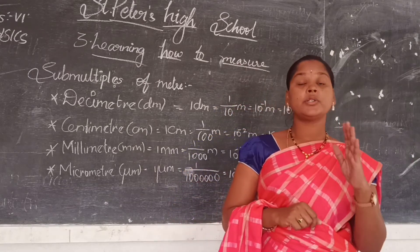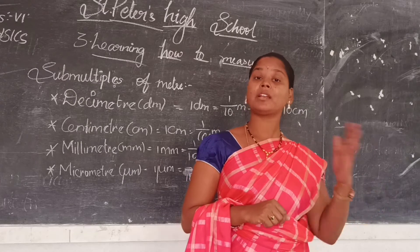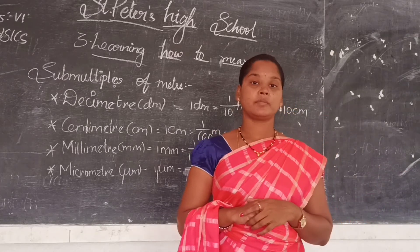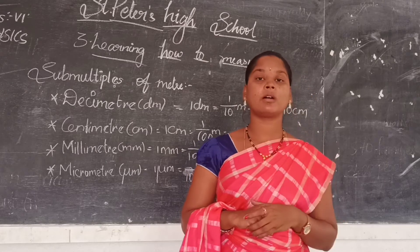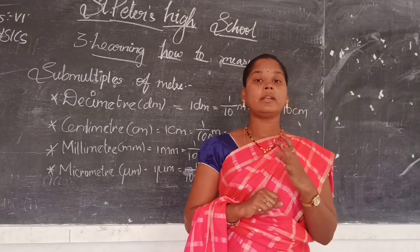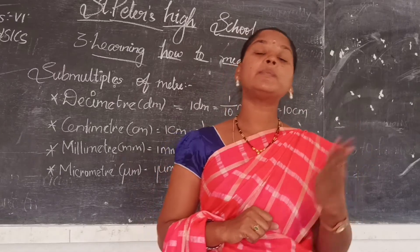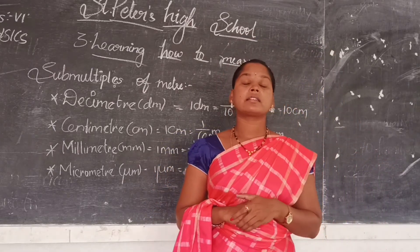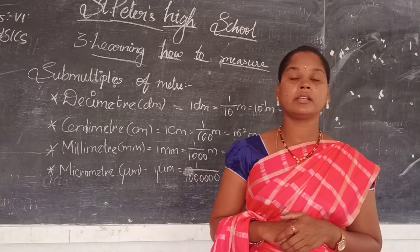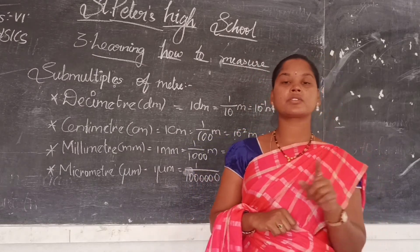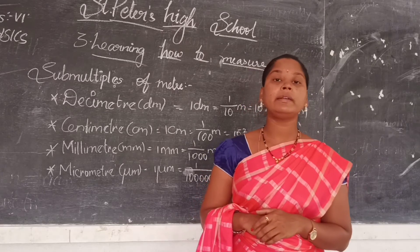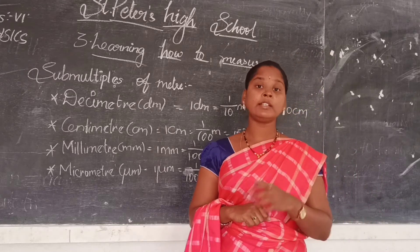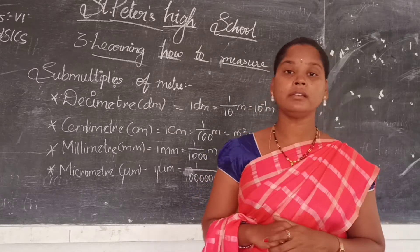This meter is divided into 100 equal parts — that is, 1 meter is equal to 100 centimeters. So that one part is called a centimeter. Yesterday we learnt the multiples of meter: decameter means 10 meters, hectometer means 100 meters, and kilometer means 1000 meters.